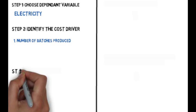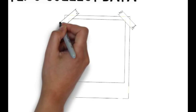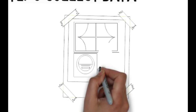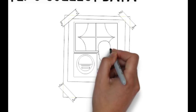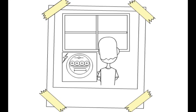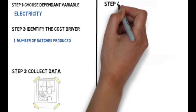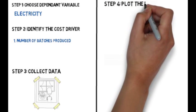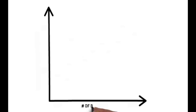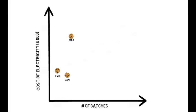Step three involves collecting data on the dependent variable and the cost driver. Bob carefully monitors the number of hours spent baking and matches these to cookie production. In step four, Bob then plots this data using a scatter plot to visually observe the relationship between the cost and its driver.